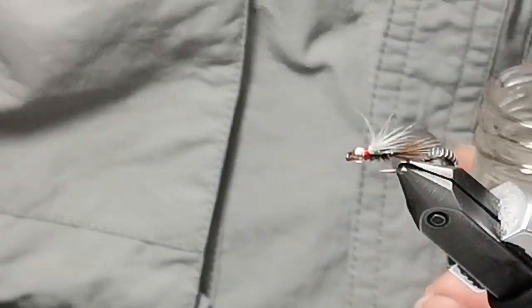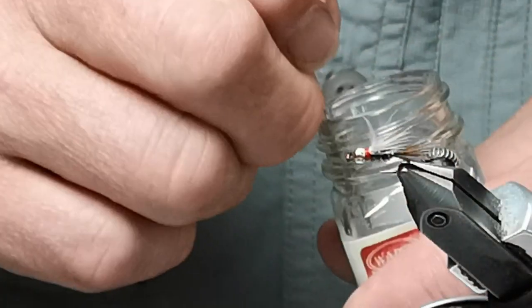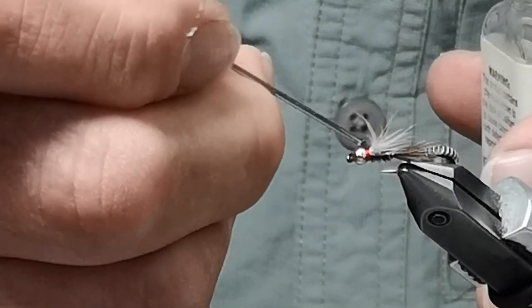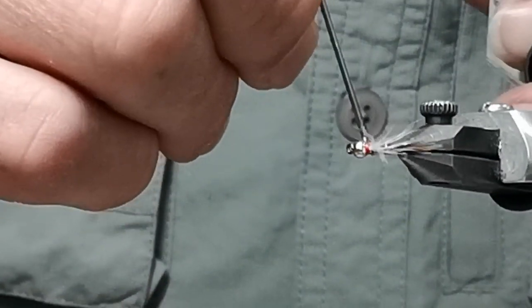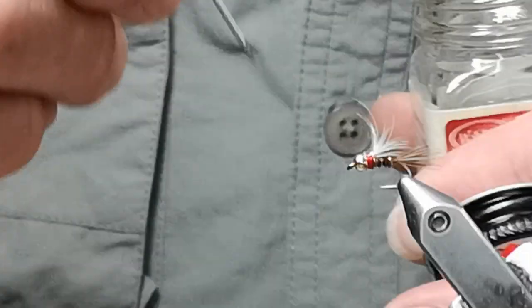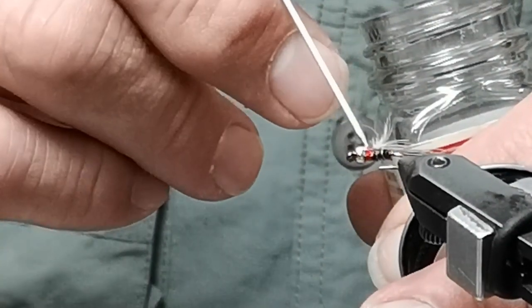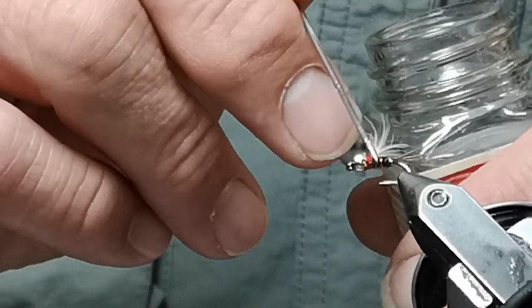If you've run out of hatches and you want to drift it in a back eddy or in a run, the fly works fantastic just about anywhere and everywhere. Hanging it under an indicator in the back eddies in May and June is phenomenal fishing.